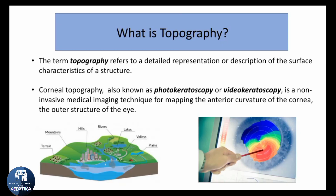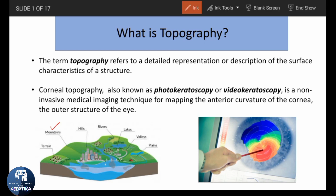The word topography comes from planetary science, which means the study of surface, shape and features of the earth. Just like the topography of the earth includes mountains, peaks, valleys, rivers and seas — all describing the surface of the earth — in a very similar manner we have the topography of the cornea. The term topography refers to a detailed representation or description of the surface characteristics of a structure, and in corneal topography, that structure is the cornea.